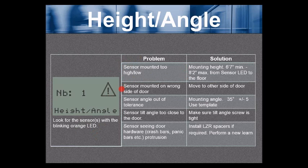The next most common problem with the height angle error is the sensor is mounted on the wrong side of the door. Move the sensor to the other side of the door. And what you'll see on each sensor is a little red arrow. The arrow should be pointing toward the hinge.